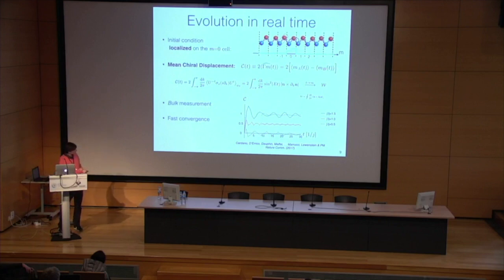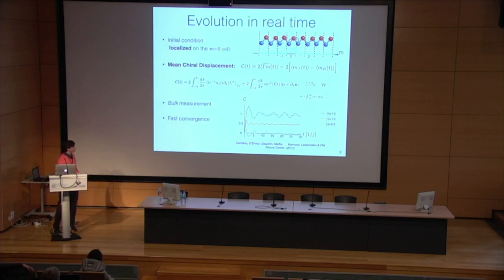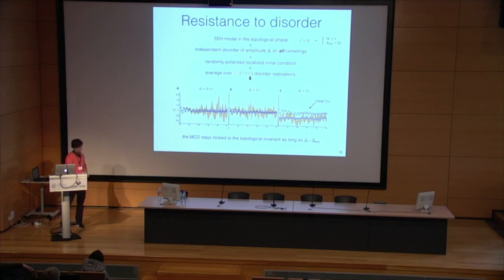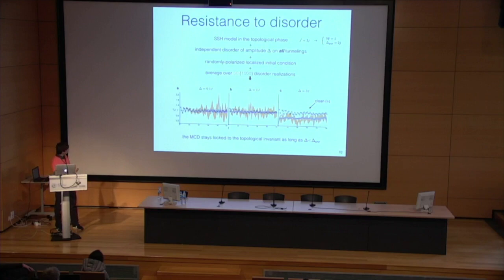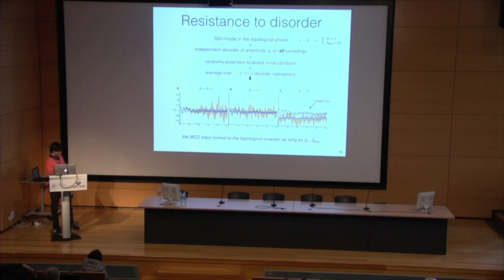For example, the model is in the trivial phase for the green line, and this quantity converges to zero. If the model is in the topological phase, this quantity rapidly converges to one. And if it's at the critical boundary, the winding converges to one half — so it not only detects topology but even detects topological boundaries correctly. This quantity is also resistant to disorder: we took an SSH model in the topological phase, added independent disorder on all tunnelings, and averaged over disorder realizations. As long as the disorder is smaller than the gap, this quantity remains locked to the invariant. When the disorder is too large, topology breaks down and the observable detaches from the expected value — but that's expected.